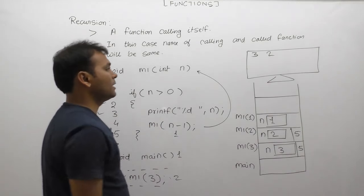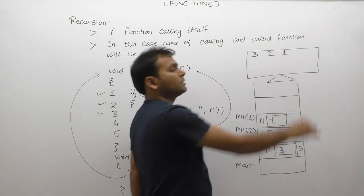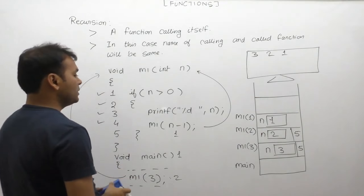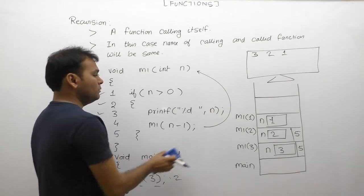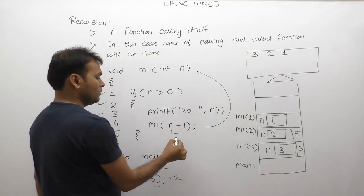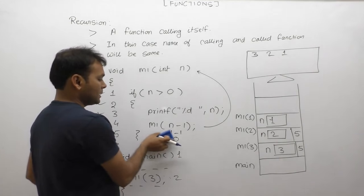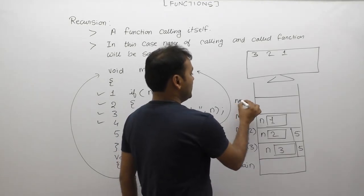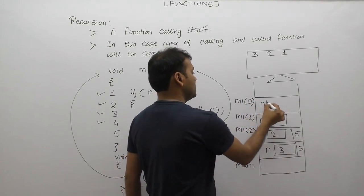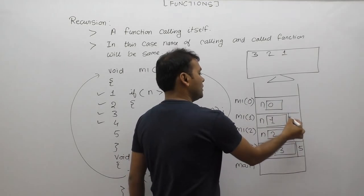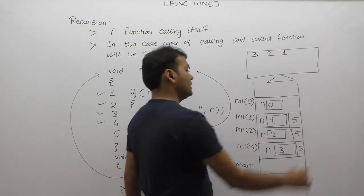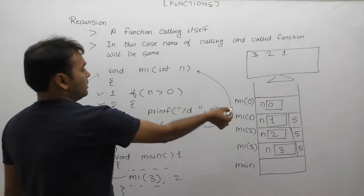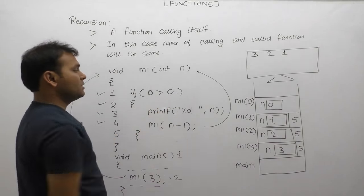With n value 1, condition is true because 1 is greater than 0. The body executes: third statement displays value of n, which is 1. Fourth statement calls m1 again with n minus 1, which is 0. m1 is called with value 0. Memory is allocated for n with value 0. The previous function's pending operation is the 5th case. Again m1 is called with 0, condition is tested: 0 greater than 0, condition is false.